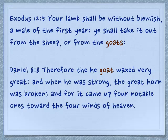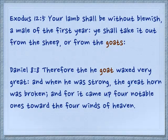Daniel 8:8: 'Therefore the he-goat waxed very great, and when he was strong, the great horn was broken, for it came up four notable ones toward the four winds of heaven.' This goat is being mentioned symbolically — it is symbolic of Alexander the Great, the ruler of Greece, who basically conquered the whole known world sometime around 300 B.C. Though the people from Macedonia will tell you he was not from Greece, but Macedonian.